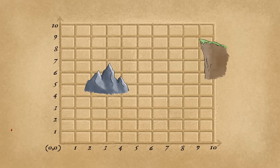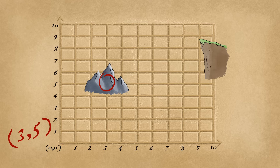To plot the ordered pair three, five: go right three, up five, to where you arrive.